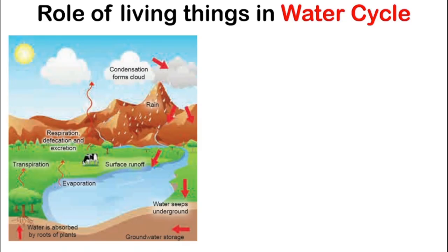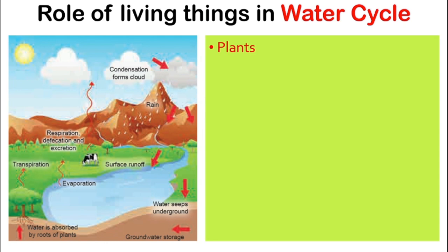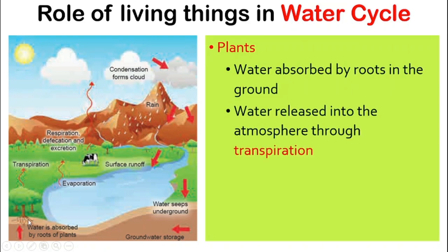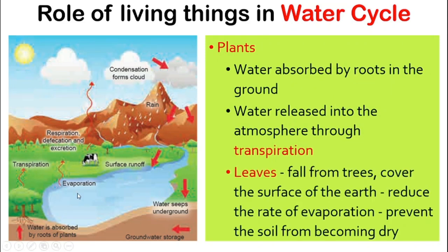Let's take a look at the water cycle first. What is the role of plants in the water cycle? The water is absorbed by the roots of plants — if you look at the picture here on the bottom part of the left-hand side. Through a process called transpiration, the water is returned back into the environment. Also, the leaves that fall from the tree will cover the surface of the earth, which will slow down evaporation, meaning the soil will not become dry too quickly.